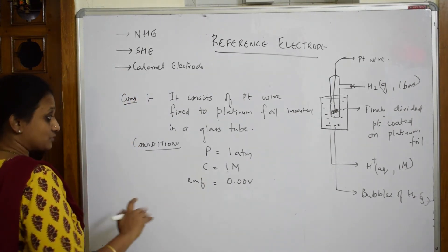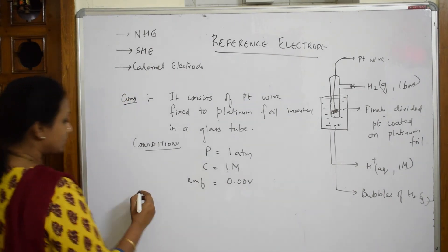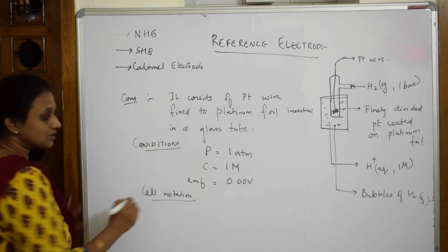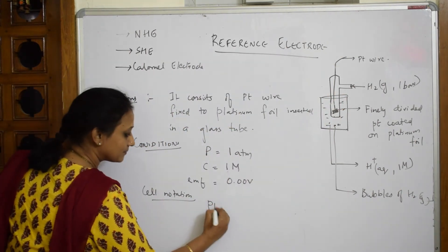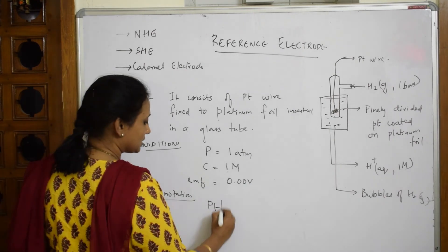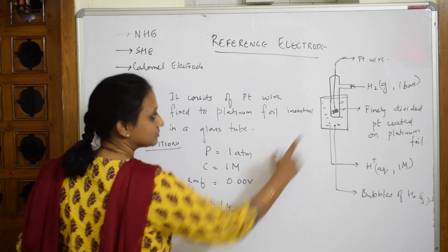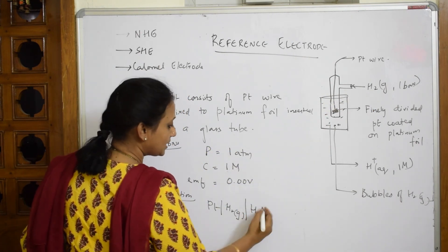Next important thing is the cell notation. How should I write it? We are using platinum wire, so write PT, one line, hydrogen gas which gets converted into H+.